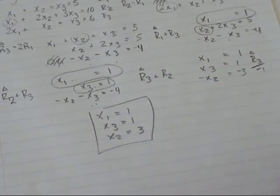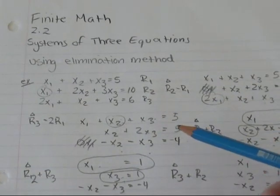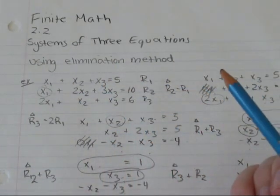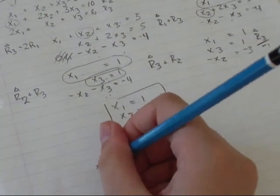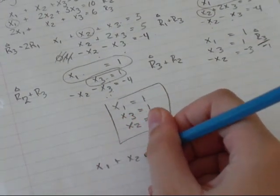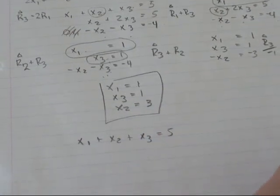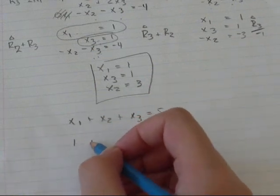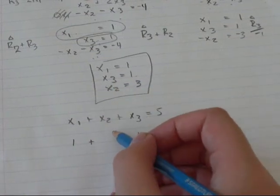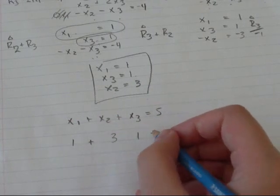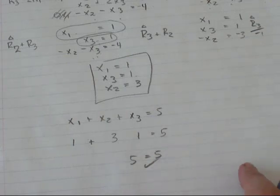So there's my answer: x1 equals 1, x2 equals 3, and x3 equals 1. You can check by plugging these values into one of the original equations. I'll plug into the first one: x1 plus x2 plus x3 equals 5. So 1 plus 3 plus 1 equals 5 — yes, 5 equals 5. Good times, we got it right.